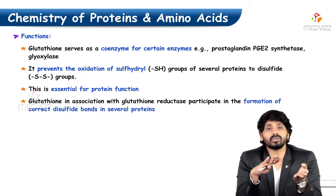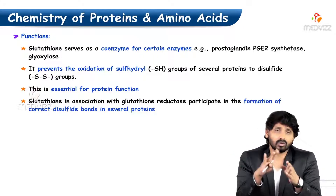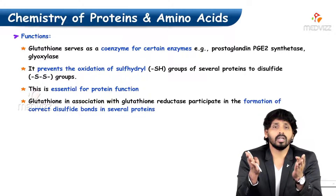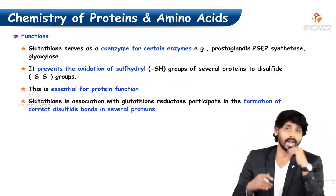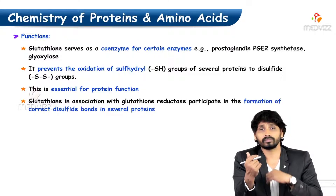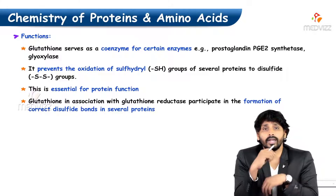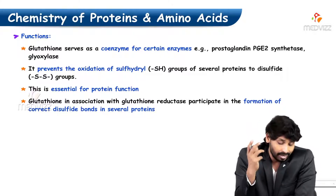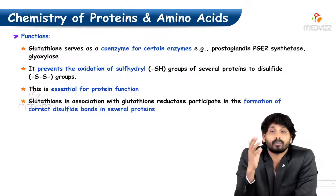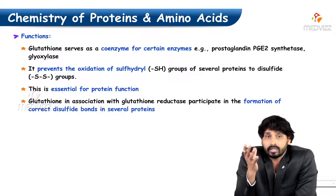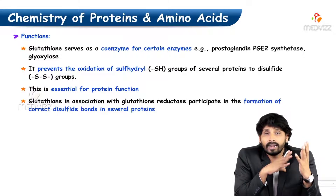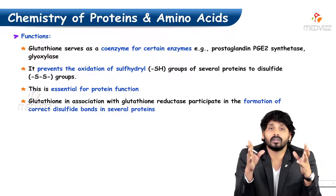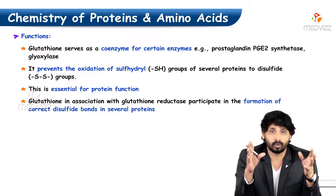Glutathione exists in reduced or oxidized states; based on the condition, it will convert to reduced form or oxidized form. Coming to the functions of glutathione: it serves as a coenzyme for certain enzymes like prostaglandin PGE2 synthetase and glyoxalase. It also prevents the oxidation of sulfhydryl groups of several proteins to disulfide groups.